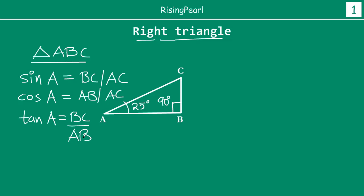Here, friends, I just want to note that cosec A is the reciprocal of sine, which is AC by BC. Sec A is the reciprocal of cos A, so that will be AC by AB, and cot A is the reciprocal of tan A, so that will be AB by BC. You can write the reciprocals of all of them.